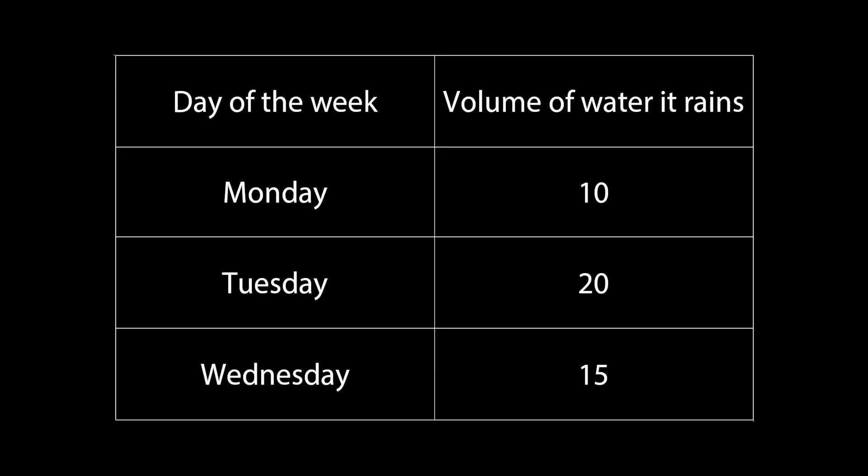On a Monday on the island, it always rains enough for 10 litres of water to be inputted into the plumbing system. On a Tuesday, it only rains enough for 20 litres to be inputted into the plumbing system. And on a Wednesday, it only rains enough for 15 litres to be inputted into the plumbing system.